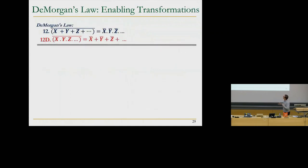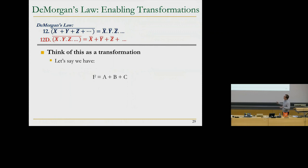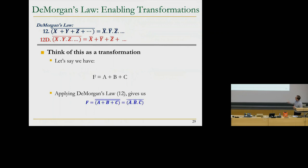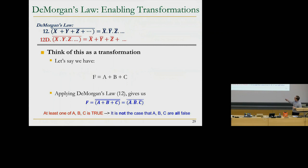De Morgan's Law: given f equals A plus B plus C — A OR B OR C — applying De Morgan's gives us NOT f equals NOT(A OR B OR C) equals NOT A AND NOT B AND NOT C. Logically: at least one of A, B, or C must be true for f to be true, which means it's not the case that A and B and C are all false.